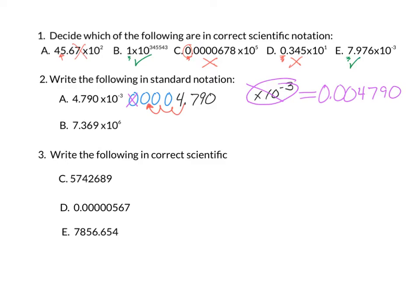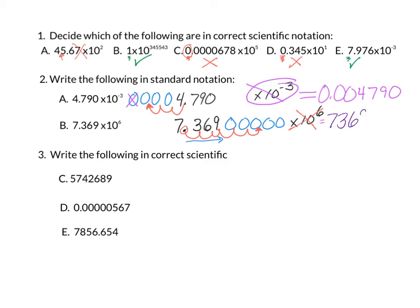Pause for letter B. Again, I'm going to rewrite the number so I have space to write in zeros. In this case, the exponent is larger than 1, so the answer will be a larger number. I'm going to add some placeholder zeros and then move the decimal over 1, 2, 3, 4, 5, and 6. And we get our answer of 7,369,000.